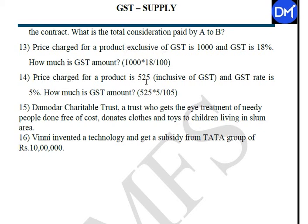The price charged for a product is Rs.525 inclusive of GST, and the GST rate is 5%. How much is the GST? This is an inclusive case — GST is already in the Rs.525. Using the reverse calculation: GST = 525 × 5 ÷ 105 = Rs.25. The transaction value is 525 − 25 = Rs.500.